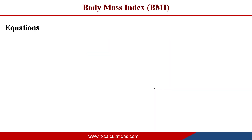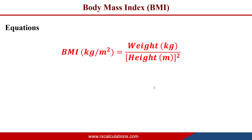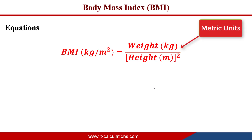Now let's look at the equations. The body mass index is a ratio of weight to the square of height, and there are two versions of the equation. For metric units, the BMI in kilograms per meter squared is equal to the weight in kilograms divided by the square of the height in meters.